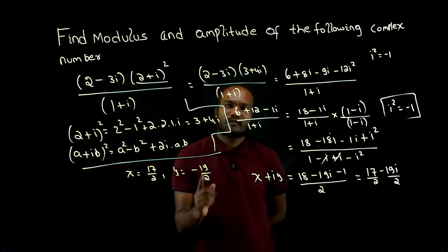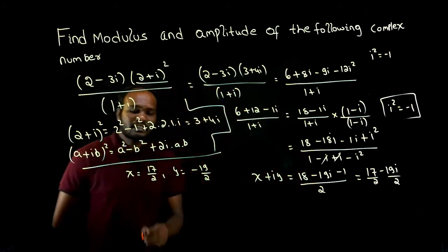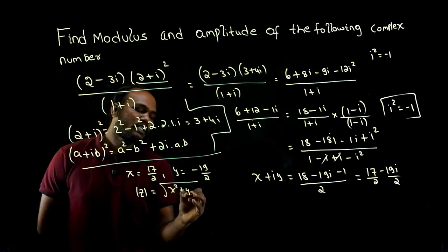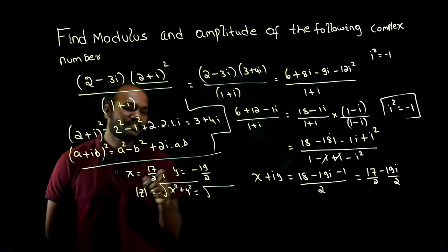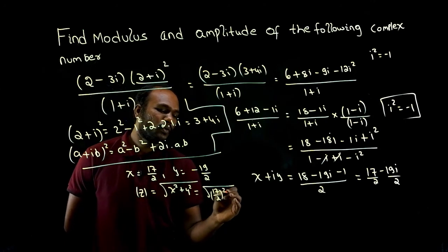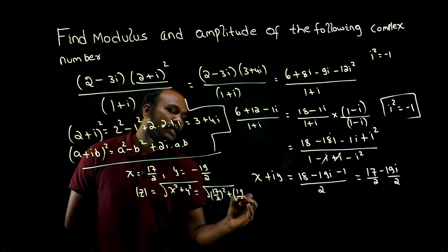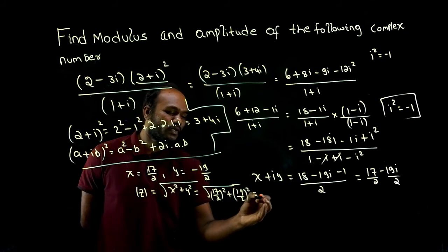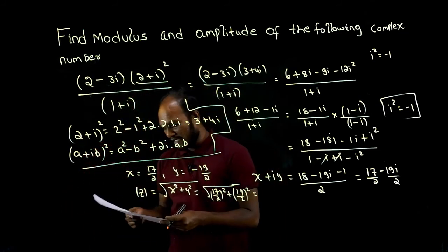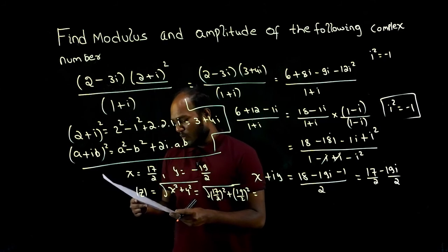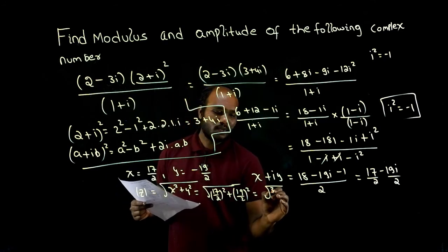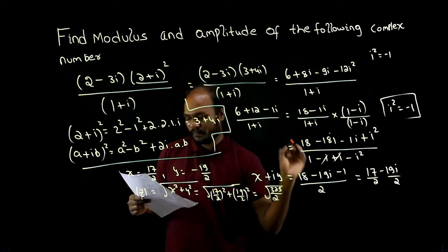To find the modulus of z: modulus of z equals root of x² plus y². That is root of (17/2)² plus (19/2)². The negative sign doesn't matter because it is squared. Putting this in a calculator gives root of 325 divided by 2.